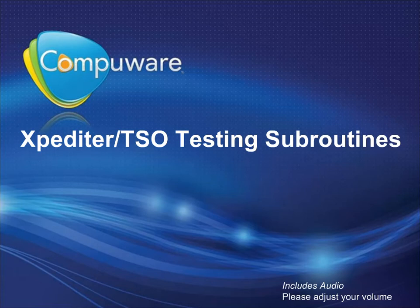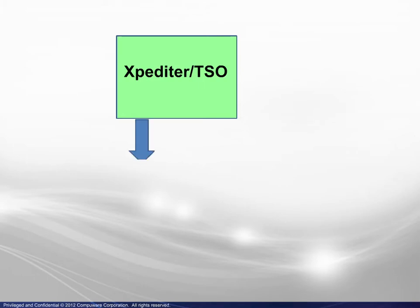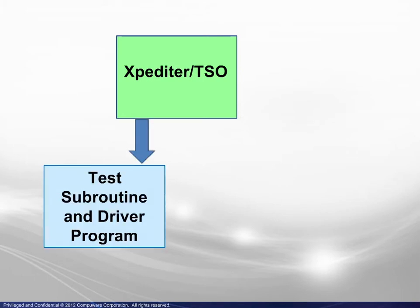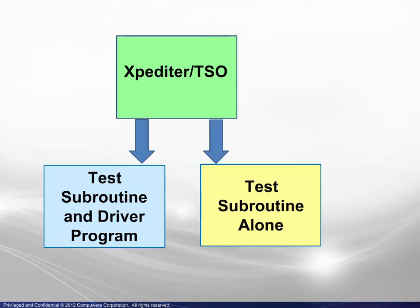Welcome to the Expeditor TSO Testing Subroutines module. Here you will learn how Expeditor may be used to test a subroutine while testing the driver program, and how to test a subroutine on its own. In order to use Expeditor to test a subroutine and its driver program, the user must inform Expeditor of that intent. To test a subroutine alone, the user must ensure that the setup has sufficient information.